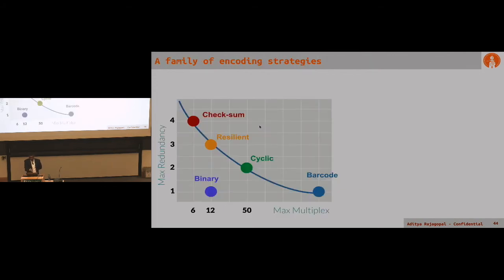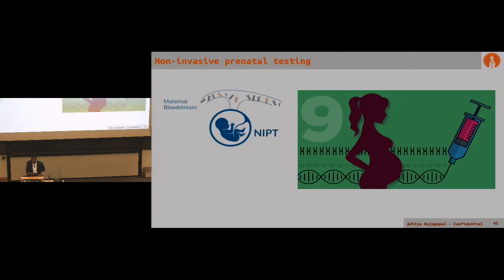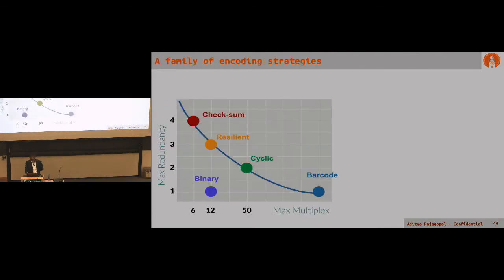As we started to explore the space, we found there was actually a full spectrum of different types of encoding strategies, each with different properties. The checksum encoding is one that is maximally error correcting, and there's others closer to barcode encoding that are maximally information dense if there's only one thing being measured.